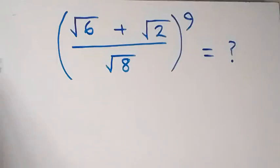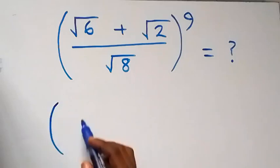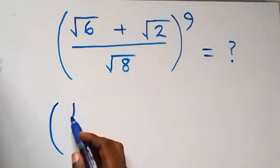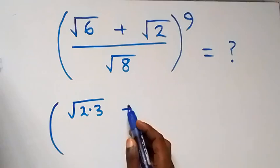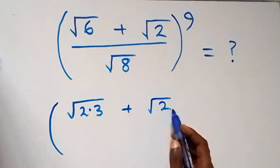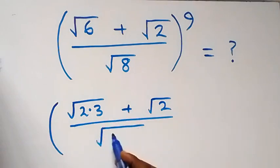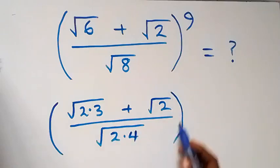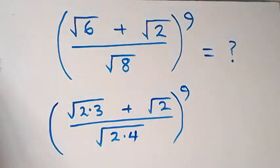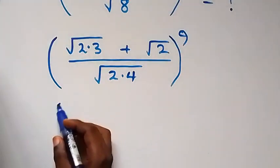Hello, you are welcome. How to solve this nice math problem involving square roots. Here we can simplify this bracket, and this gives us square root of — here we write this as 2 times 3 — then plus root 2, which is divided by — here we also write this as square root of 2 times 4, then raised to power 9.